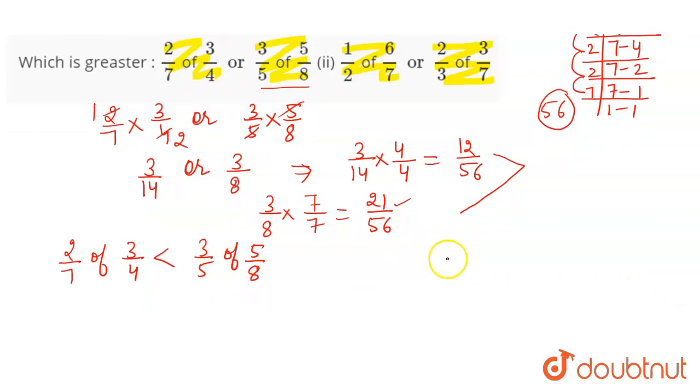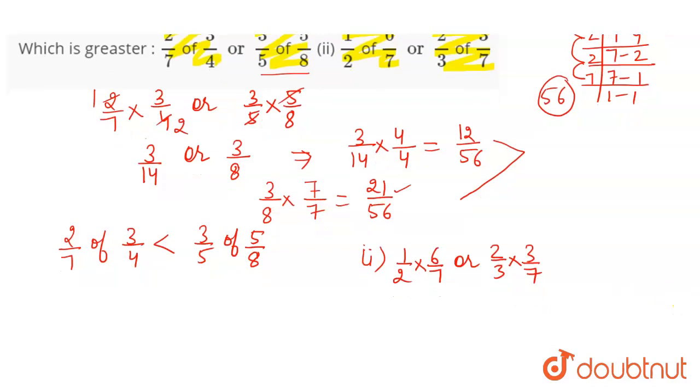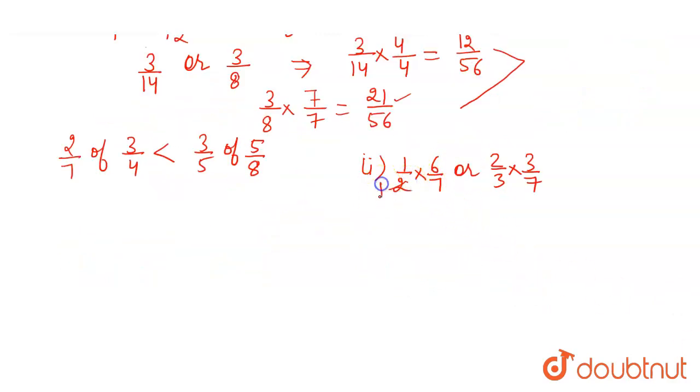Now, in the second part: 1 by 2 of means multiply 6 by 7, or 2 by 3 of multiply 3 by 7. So firstly, let's cancel: 2 into 1 is 2, 2 into 3 is 6.